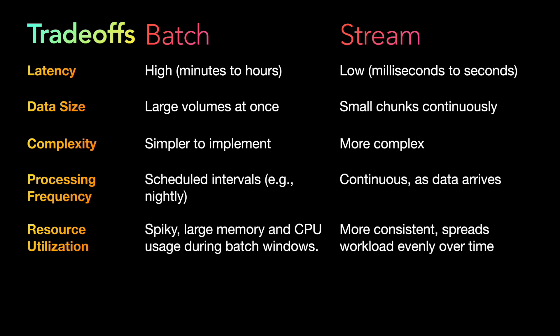Next is resource utilization. In batch processing, one of the pros is that it can optimize resource usage during peak or off-peak hours depending on the system. It is better suited for complex computations requiring significant resources. Batch processing is primarily spiky — it uses large memory and CPU because it processes a huge amount of data at one time.